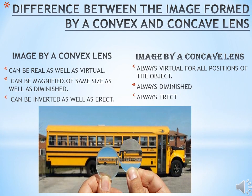Now since we have gone through the two types of lens and the ray diagrams associated with them, let's discuss the differences between the two based on the images formed. For a convex lens, the image can be real as well as virtual - it is real if the object lies beyond the focus, while it is virtual if the object lies before the focus. But in the case of a concave lens, the image is always virtual for all positions of the object.